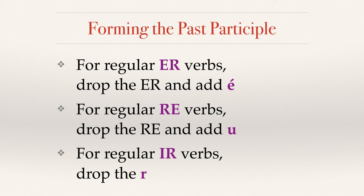To form the past participle, it's very easy. For ER verbs, all you have to do is drop the ER and put an É. We have one irregular ER verb — you're going to do the same thing for it: drop the ER and put an É. For regular RE verbs, you'll drop the RE and put a U. And for regular IR verbs, you're just going to drop the R — it's the easiest one.